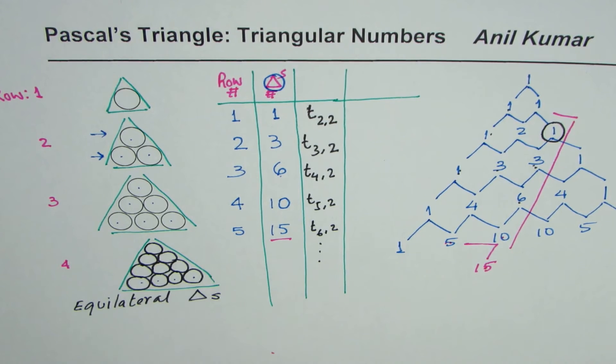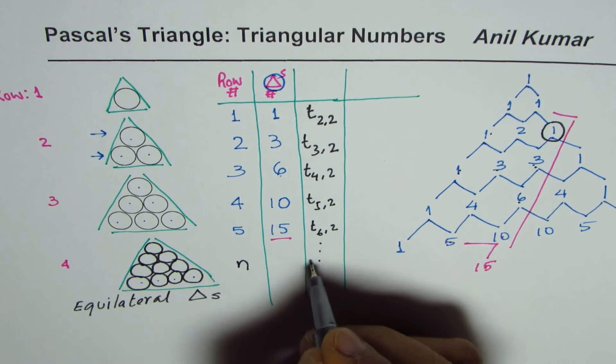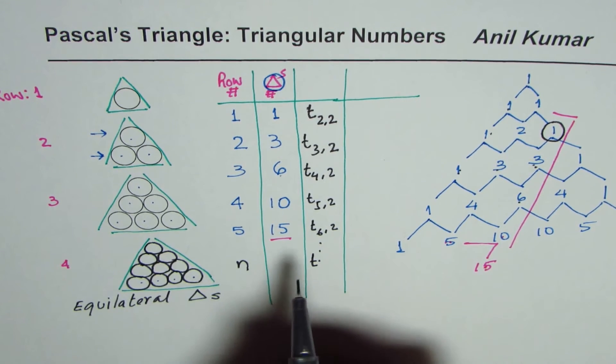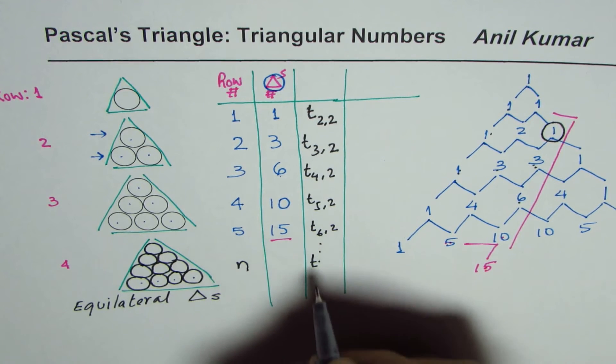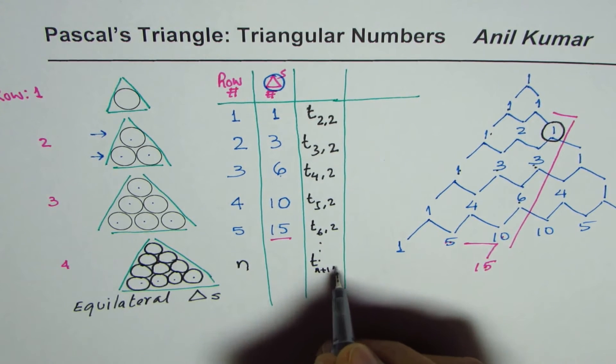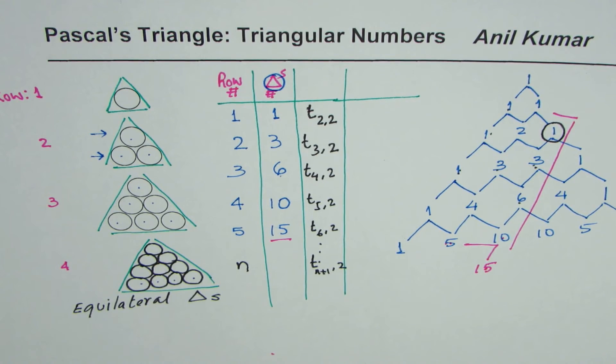So when you relate them, what relation do you see? If I have nth row, in that case, this should be T_{n+1,2}. So that is how we can find number of circles in nth row.